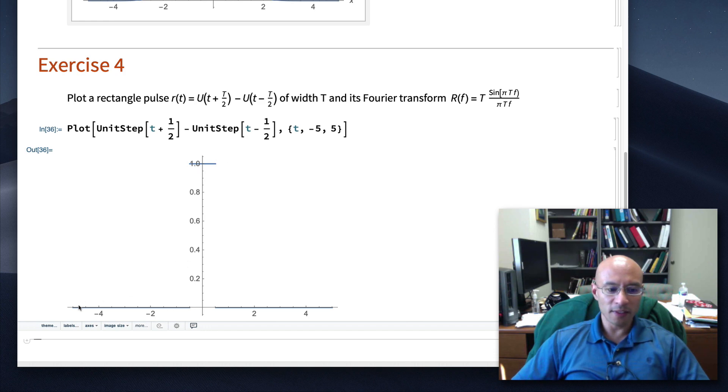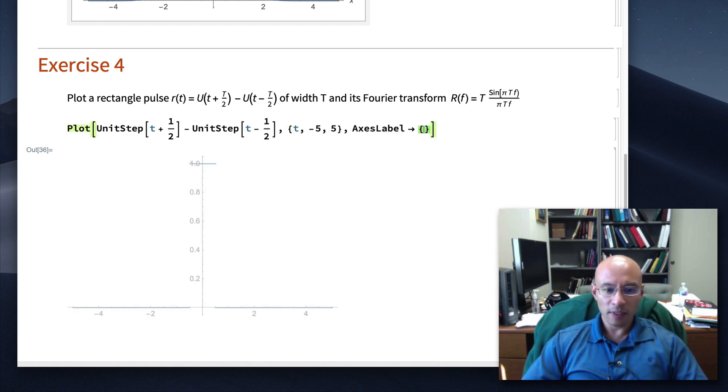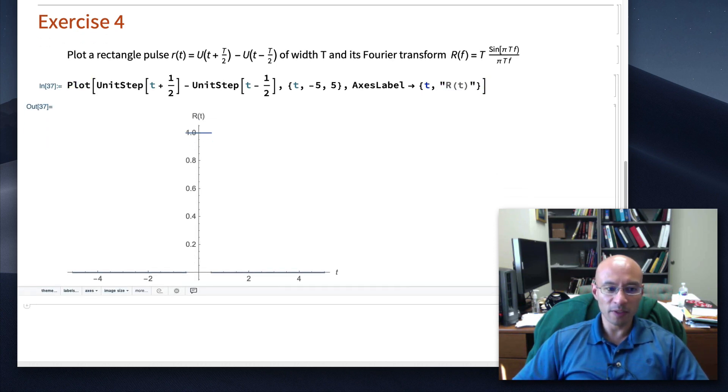Because it starts at 0 and then at T equals 1 half, it jumps up to 1 and then drops back down. We should put in labels. X label is T. Y label is R of T. Okay, so there are some labels.